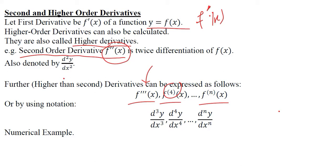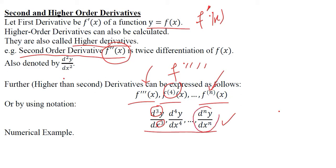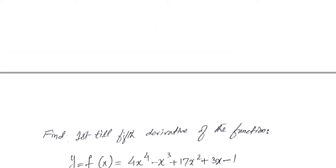If we go to the fifth derivative or any higher derivative, the bars increase and become unsuitable. So we use the digit 4, 5, or n to show the level of the derivative being calculated. Another suitable way places the digit after the independent variable x to show the current level of derivative — for example, the nth order derivative.